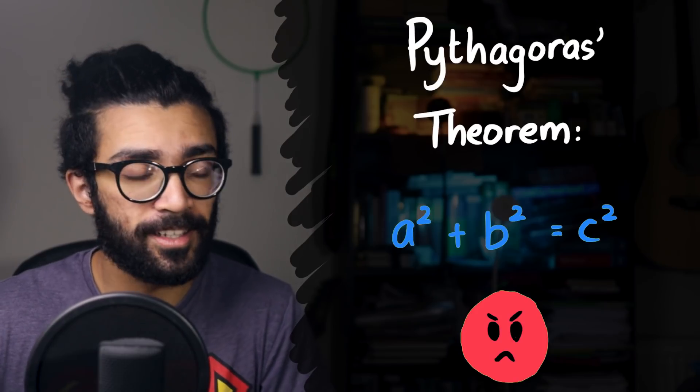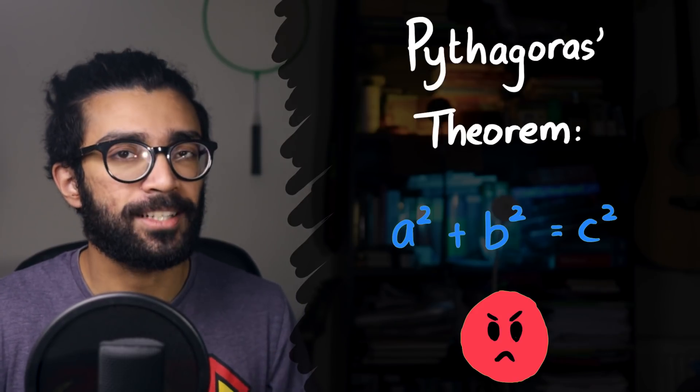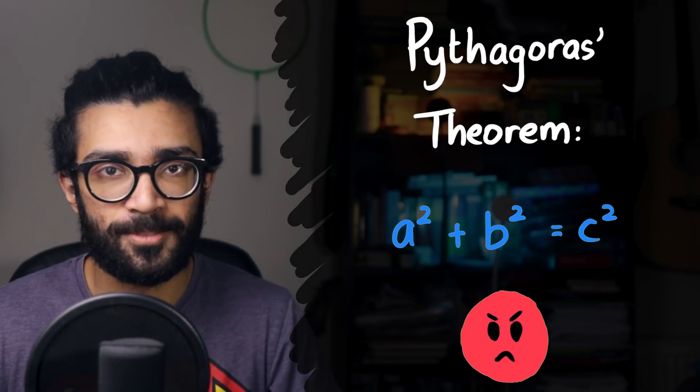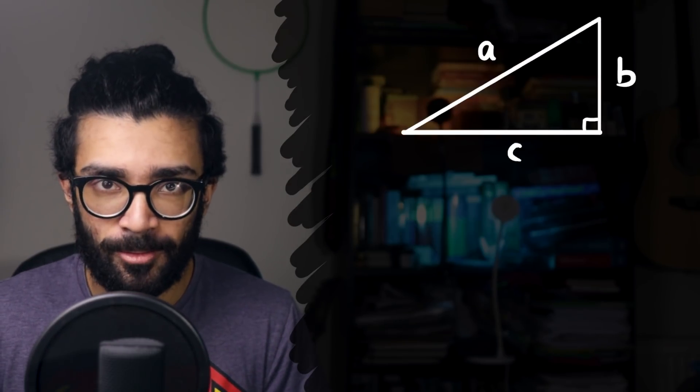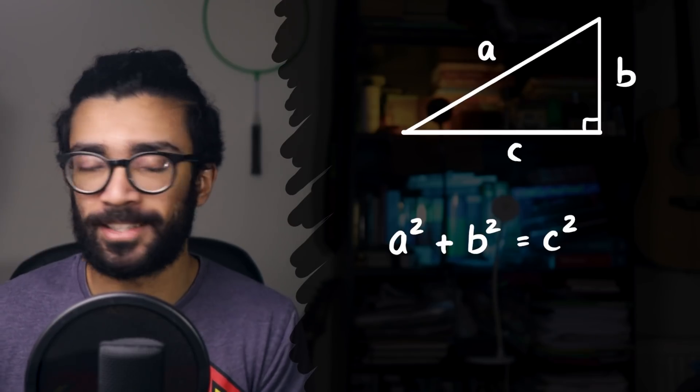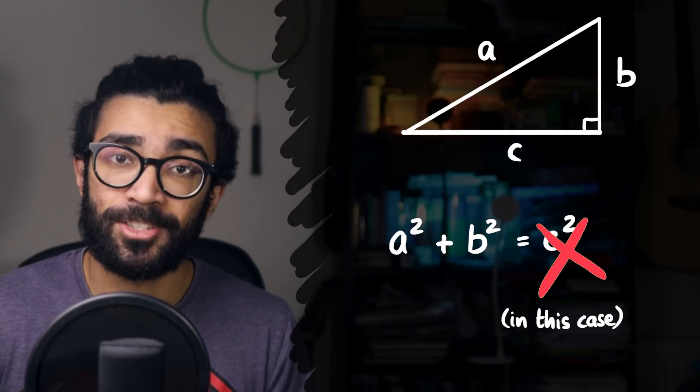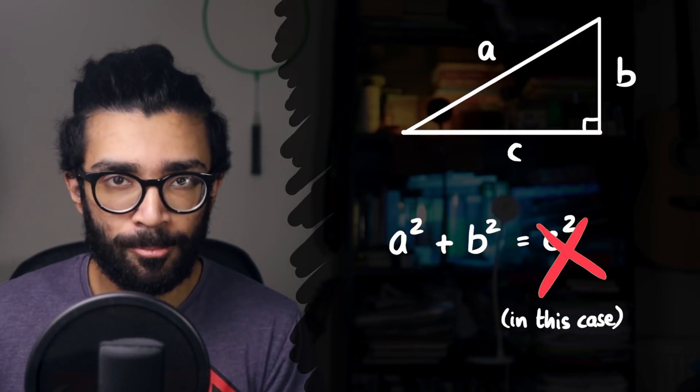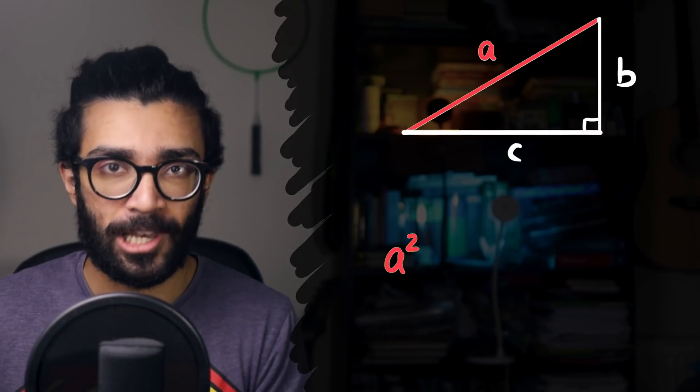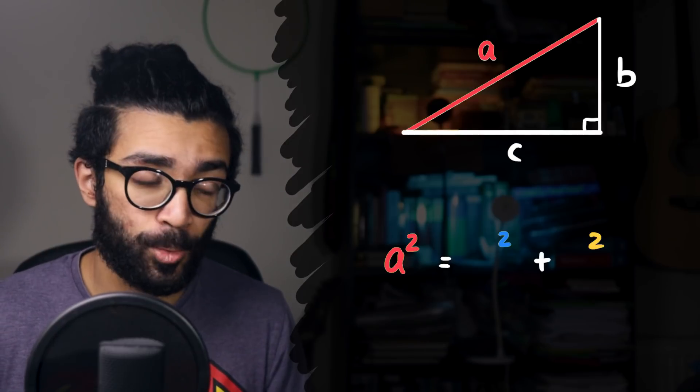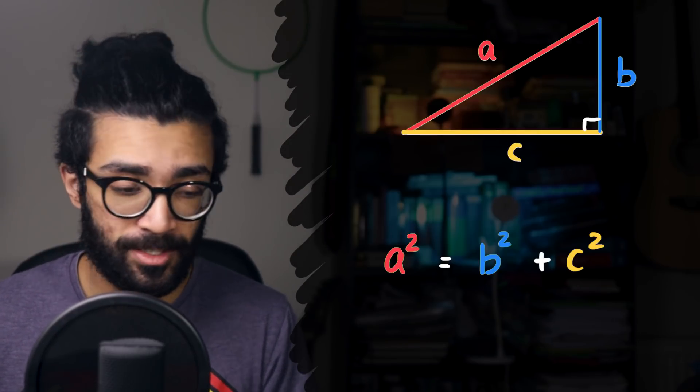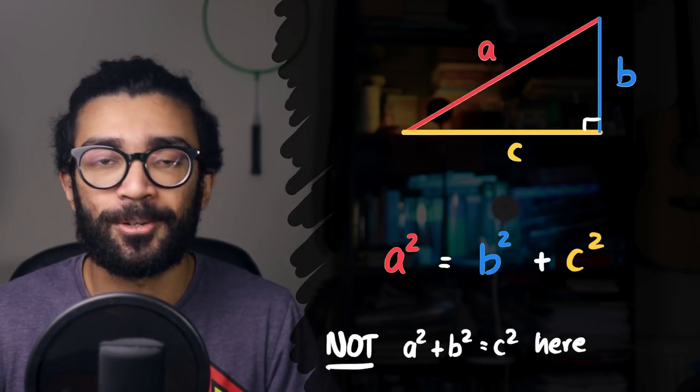In one of our class tests, he decided to set us a question where we had to find the length of one of the sides of this triangle. And everybody who remembered Pythagoras' theorem simply as A squared plus B squared equals C squared got that question wrong. Whereas everybody who remembered that the square of the length of the longest side of the triangle was equal to the sum of the square of the two shorter lengths, as long as it was a right-angled triangle, got that question correct.